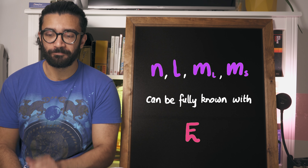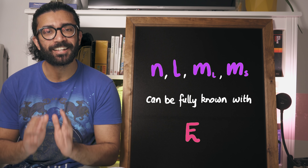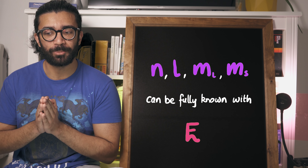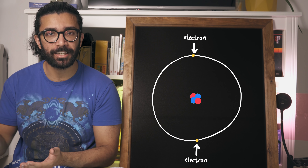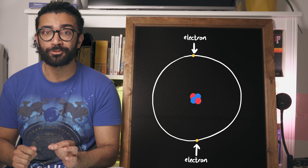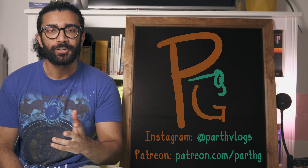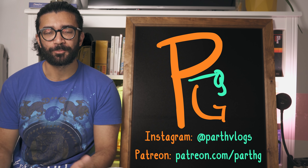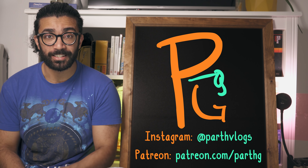Now to understand the meaning of everything I've said so far, let's understand how quantum numbers can be used to describe a very particular quantum system: electrons in an atom. If you enjoyed this video then please do hit the thumbs up button and subscribe for more fun physics content.